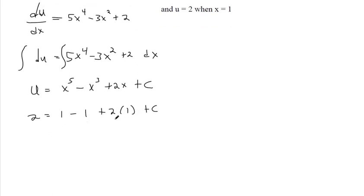Alright, so this makes 0, 2 times 1 is 2, so we've got 2 equals 2 plus c. What does c have to equal in order to make this equation true? You could finish solving by subtracting 2 from both sides, but c should be 0.